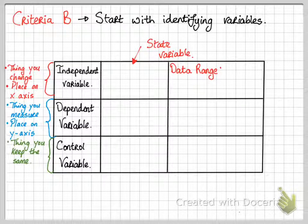For an independent variable you should include a data range. So for example, if you're changing the temperature in the experiment you should include what temperatures you're using. So is it 10 degrees, 20 degrees, 30 degrees. So the range of data you'll be using.